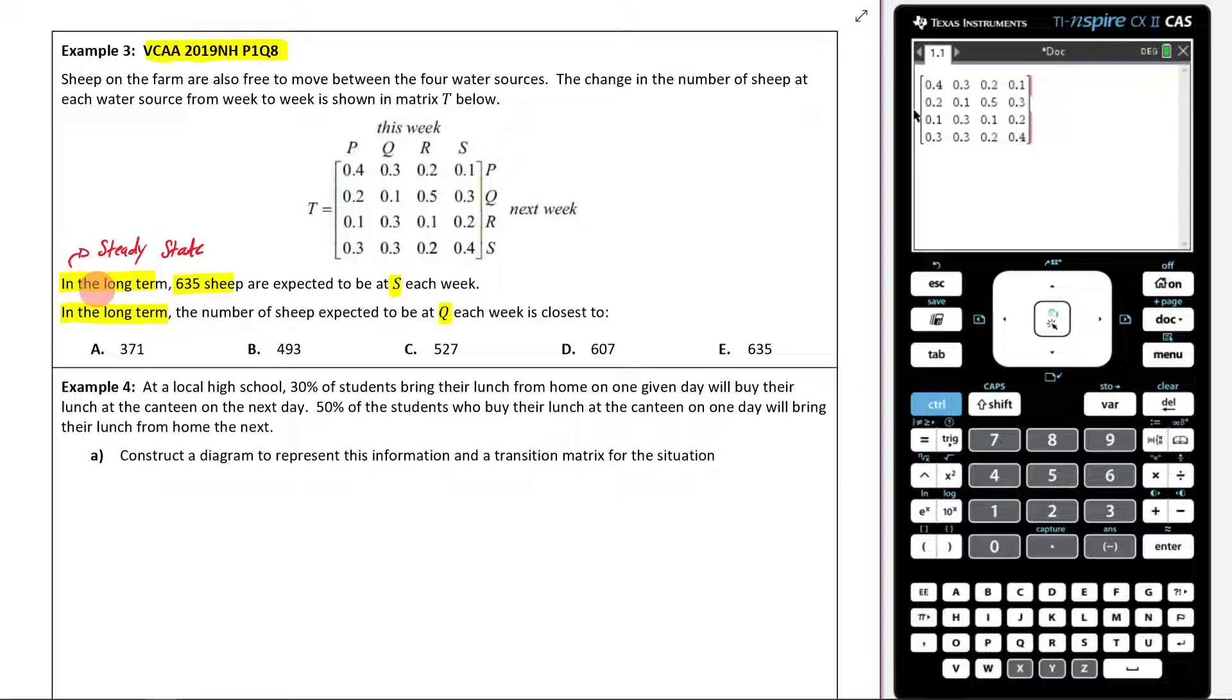The first thing I'm going to do is recognize they haven't given me the initial state, have they? If they haven't given me the initial state but they're asking me to find the steady state, what I know I can do is find the percentage at each of these water stations in the long term. When they haven't given you the initial state, you can still find the percentage steady state just with the transition matrix. So I'm going to take T and raise it to the power of 50 and see what we get out.